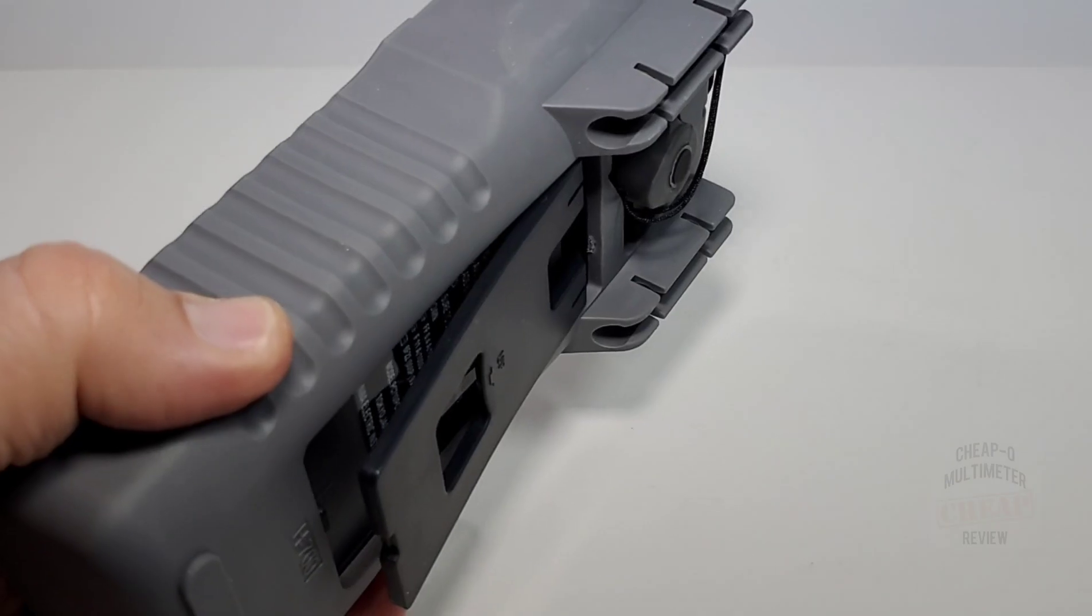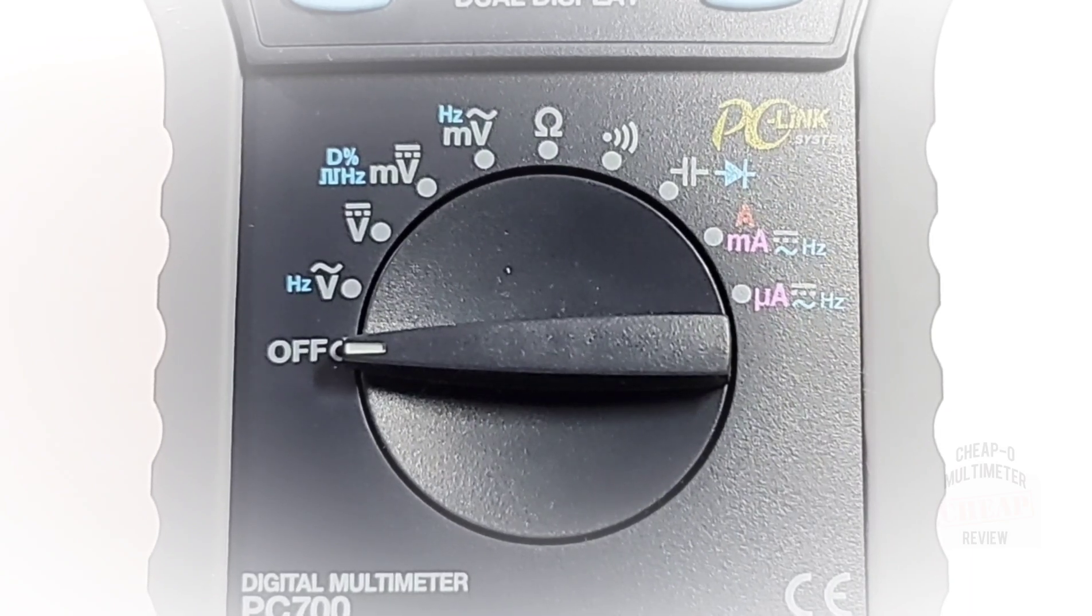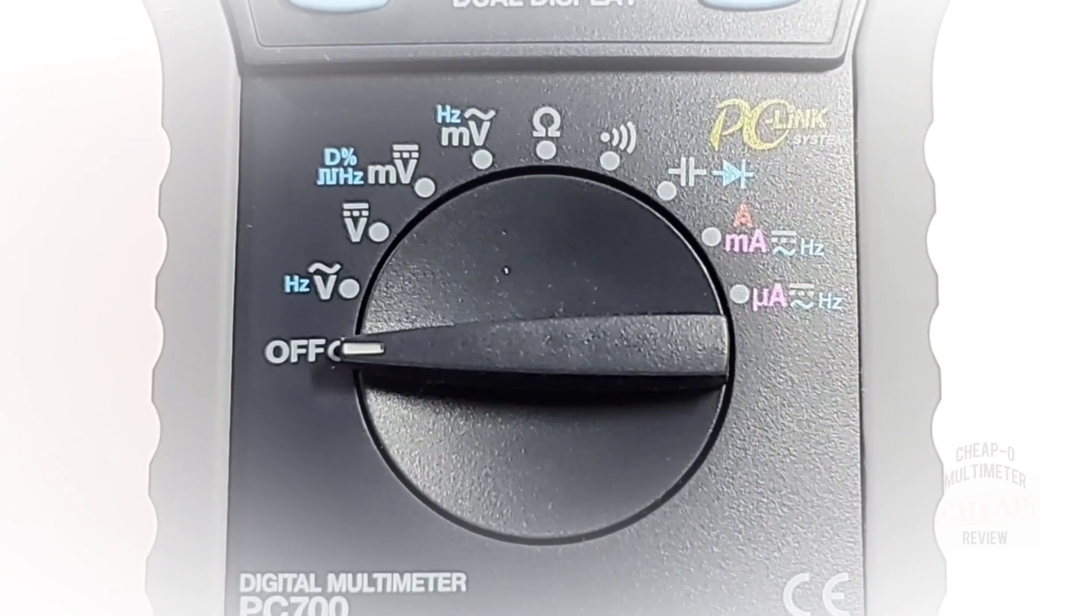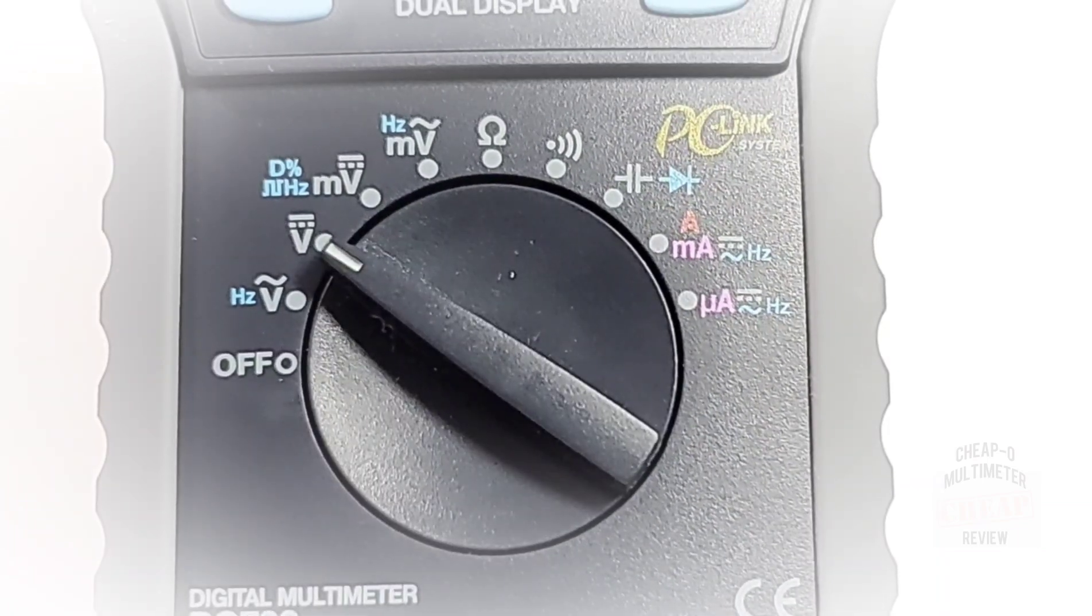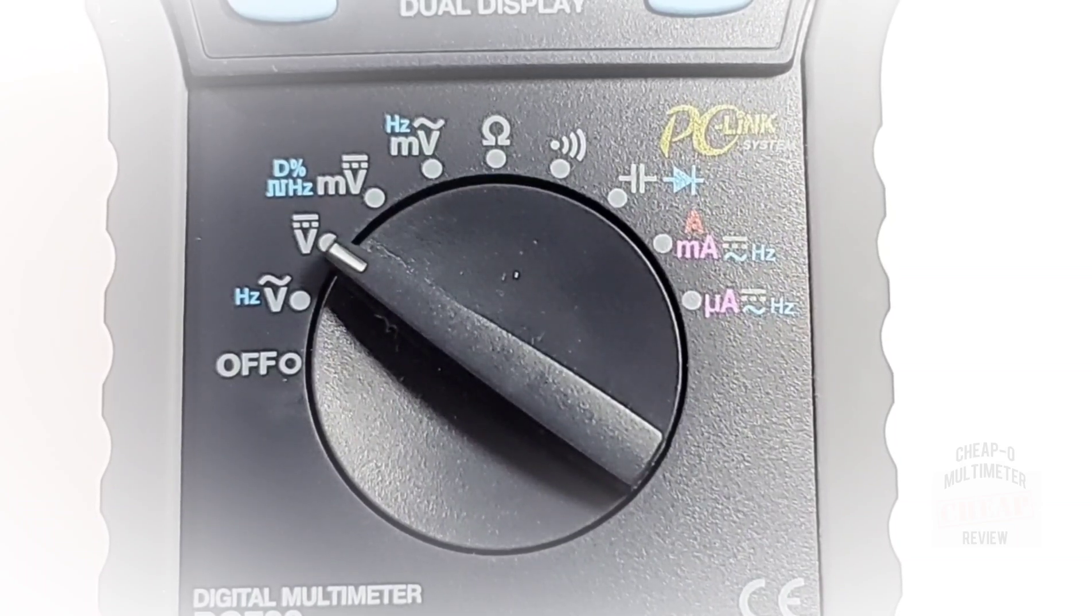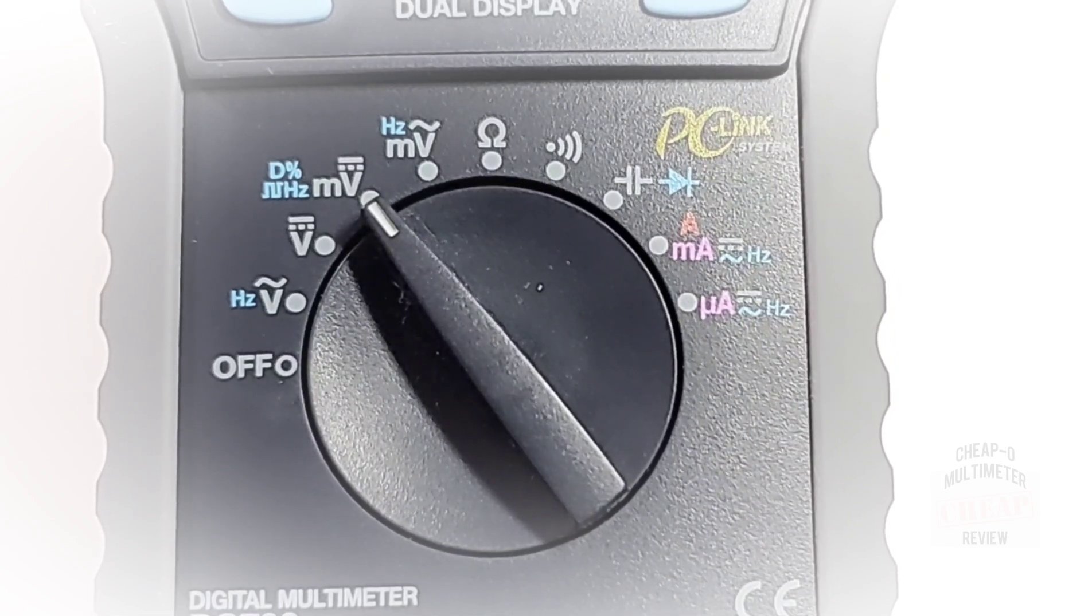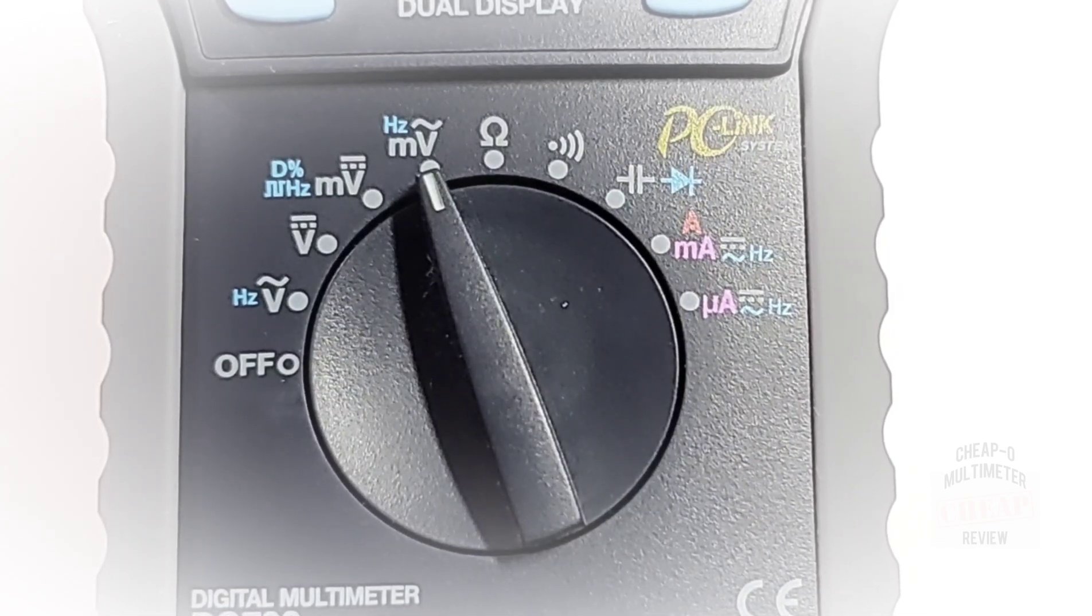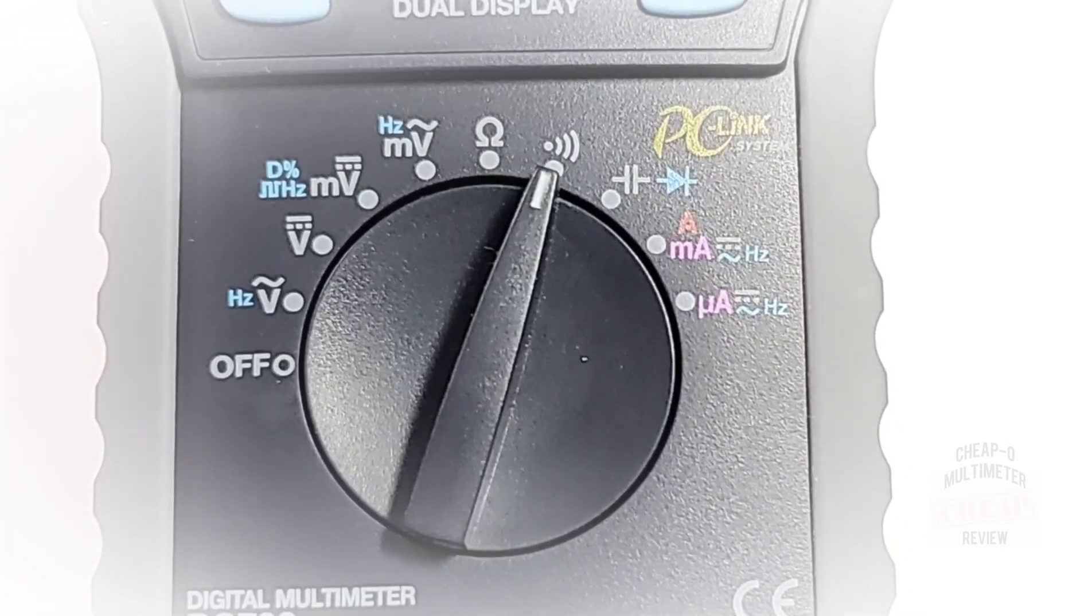That tilt stand comes out at a nice 45-degree angle. Taking a closer look at that selector switch, starting off at the nine o'clock or off position: volts AC plus frequency, volts DC including duty cycle and logic level frequency, millivolts from 60 to 600 millivolts AC including frequency.